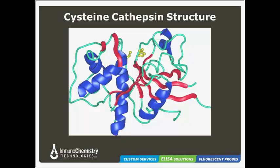With some background on how cathepsins function, let's take a look at the structure of the cysteine cathepsins. What you're looking at here is cathepsin L, which is typically used to represent the cysteine cathepsins as a whole. We can see that it is made of two domains: the left domain contains three alpha helices — the longest, known as the central helix, is over 30 residues long. The right domain is a beta barrel enclosed by an alpha helix at the bottom. The two domain interface opens at the top, forming the active site cleft, which contains two reactive site residues: a cysteine from the left central helix and a histidine from the right beta barrel, forming the thiolate-imidazolium ion pair necessary for proteolytic activity.